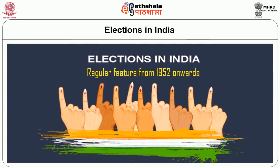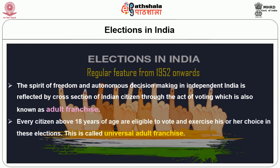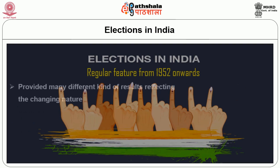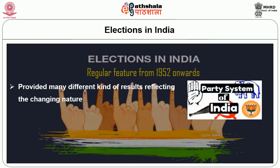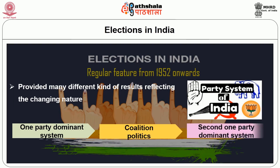Elections in India became a regular feature from 1952 onwards. The spirit of freedom and autonomous decision-making in independent India is reflected by a cross-section of Indian citizens through the act of voting, also known as adult franchise. Every citizen above 18 years of age is eligible to vote — this is called universal adult franchise. Elections in India have provided many different kinds of results, from a one-party dominant system in the Congress era from 1947 to 1977, to coalition politics from 1990 to 2014, to a second one-party dominant system era from 2014 to the present.